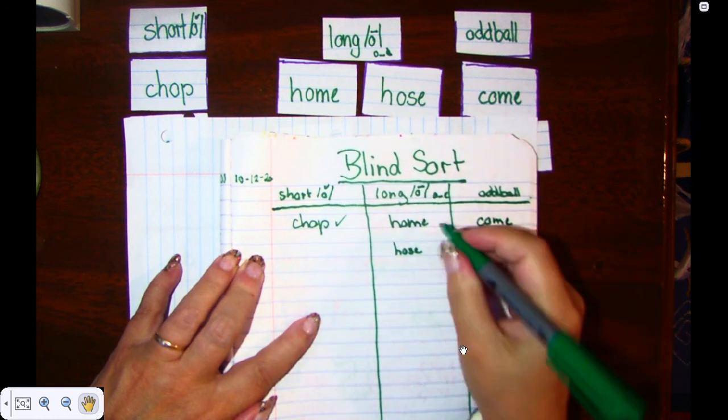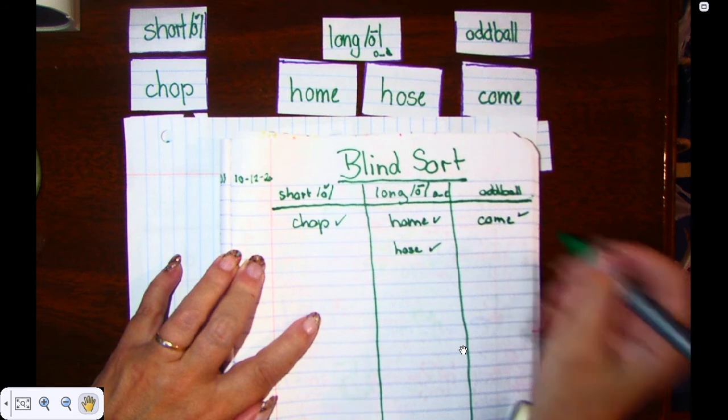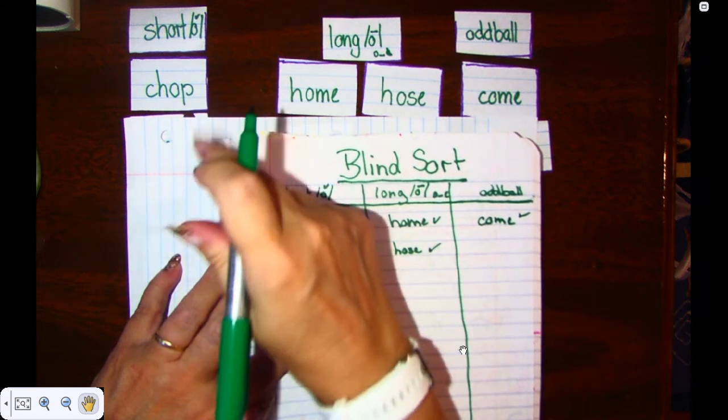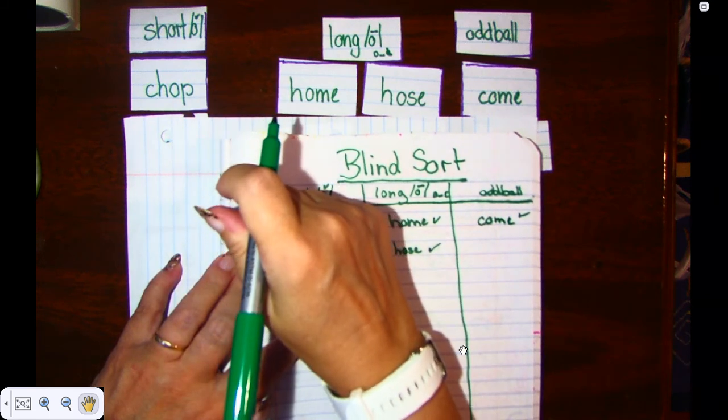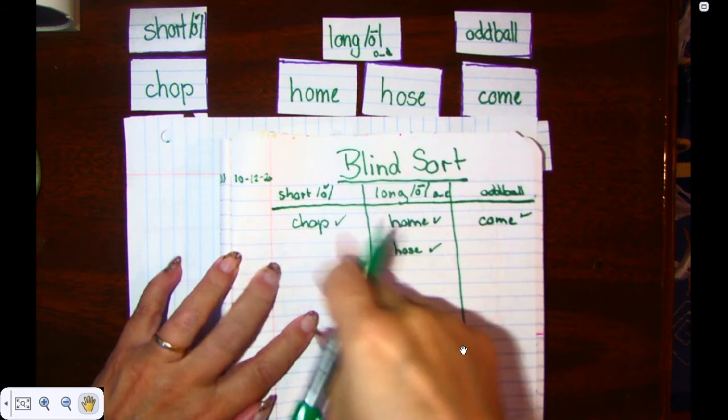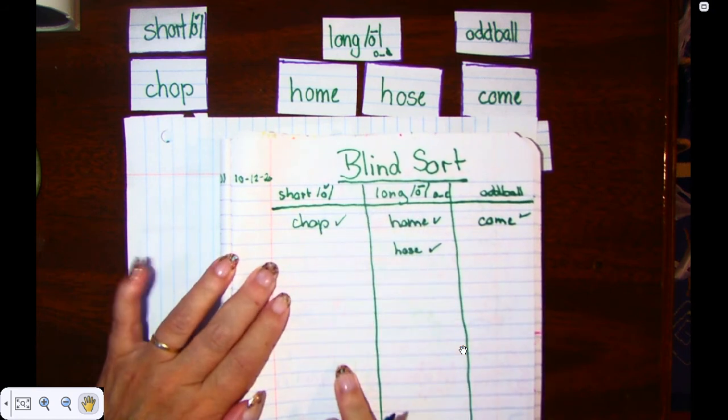So now I know these are all correct. But if I did not have the sort open, I would have to unveil it and check how many I have right, and then add all the ones that I have forgotten.